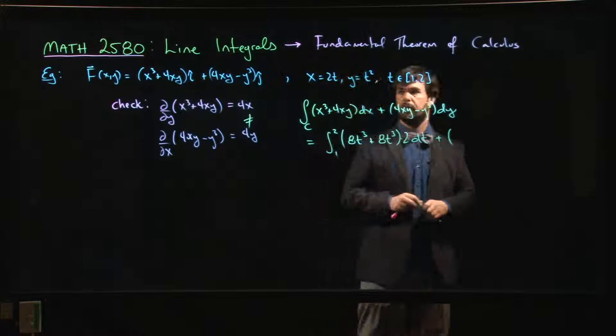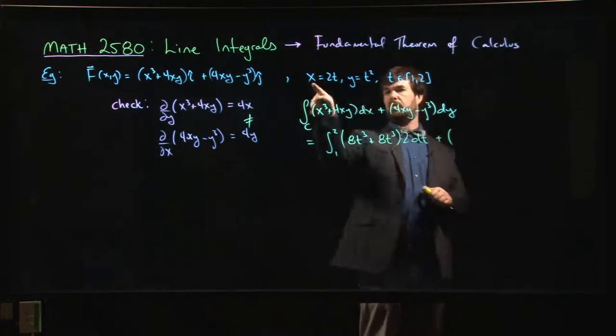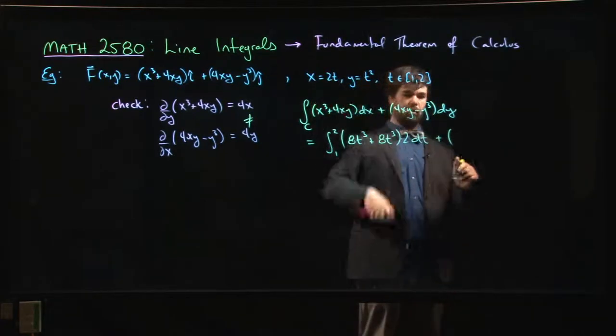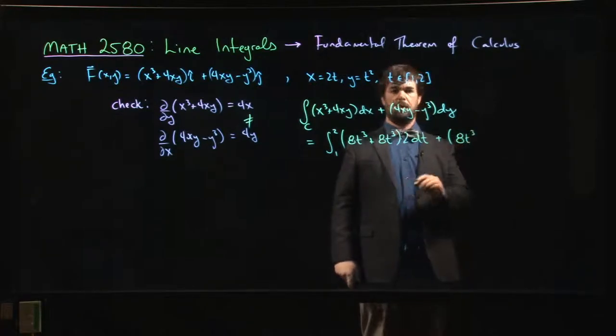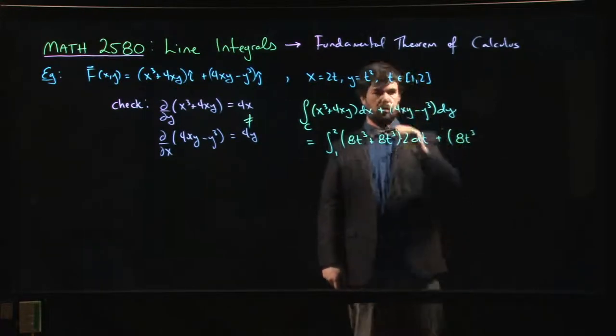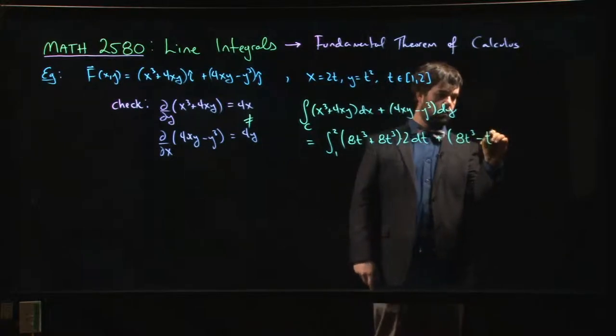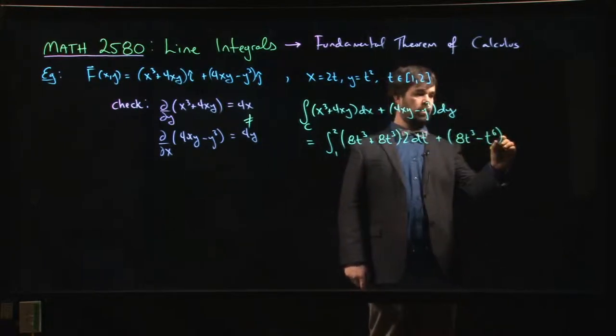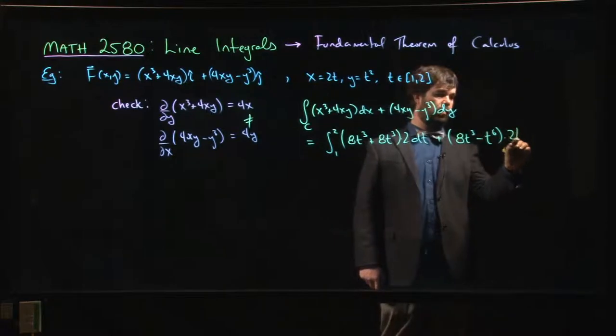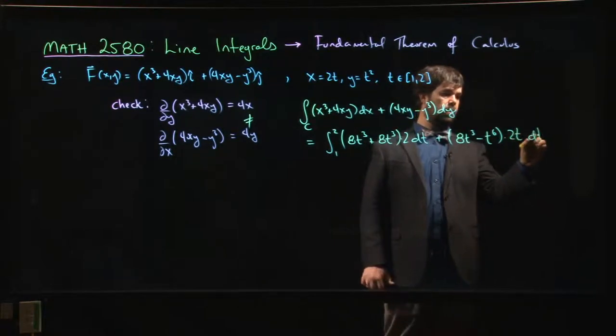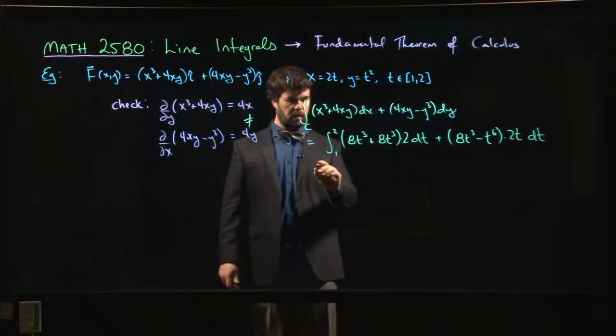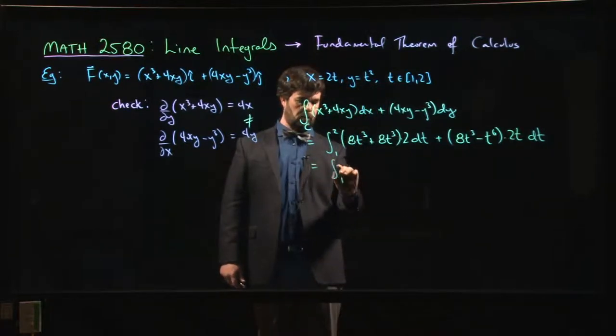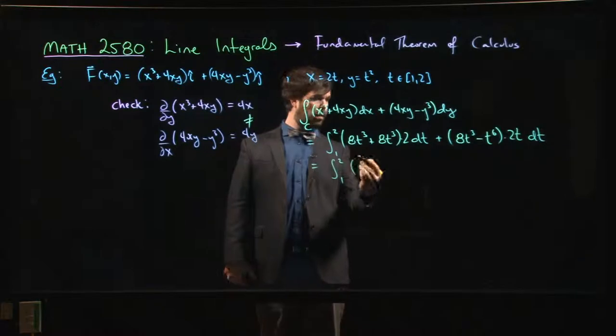Then we're going to have 4 times x, so again 8t times t squared—that's 8t cubed again. And then y cubed, so that's minus t to the sixth. And that's going to be times dy, so 2t dt.